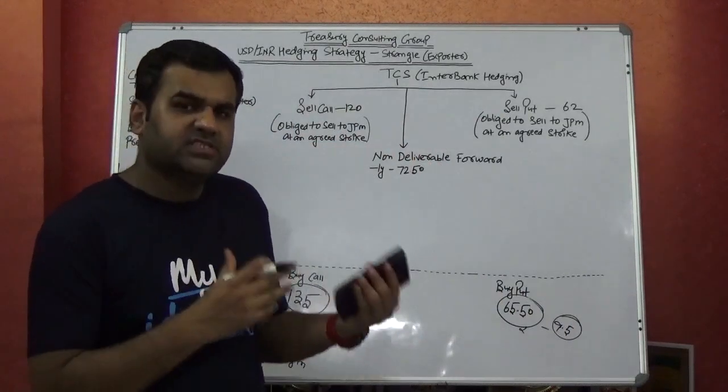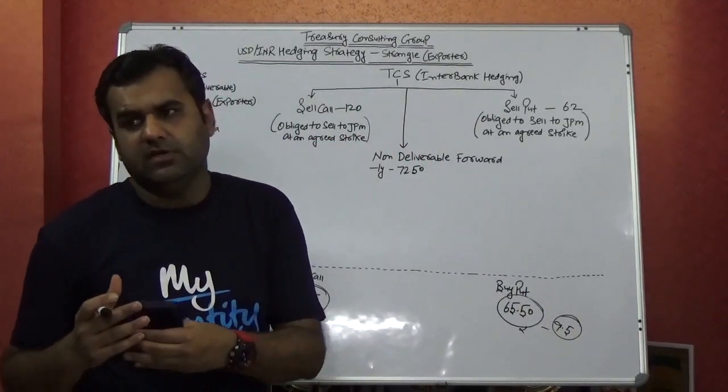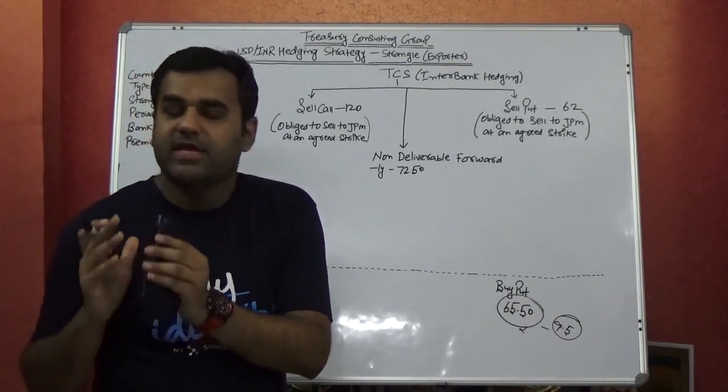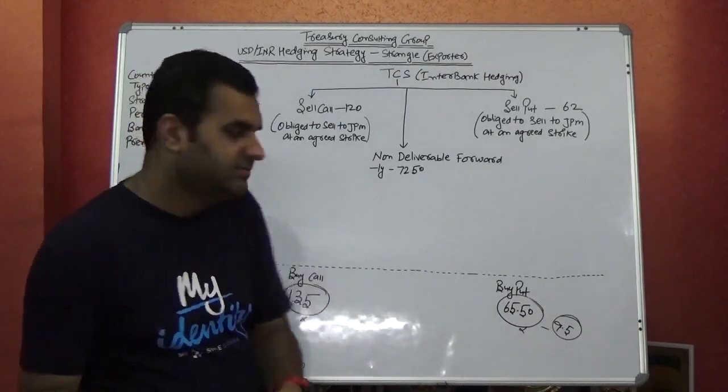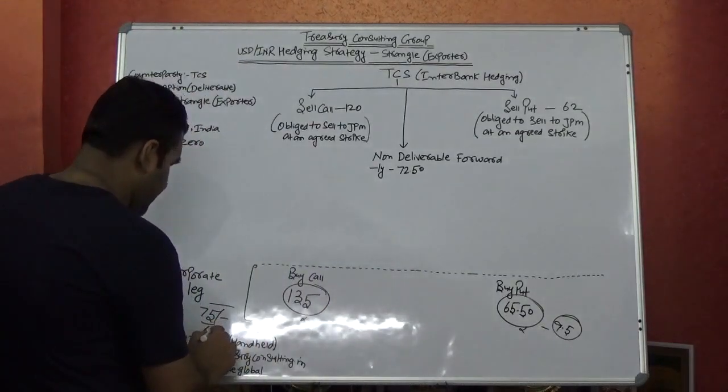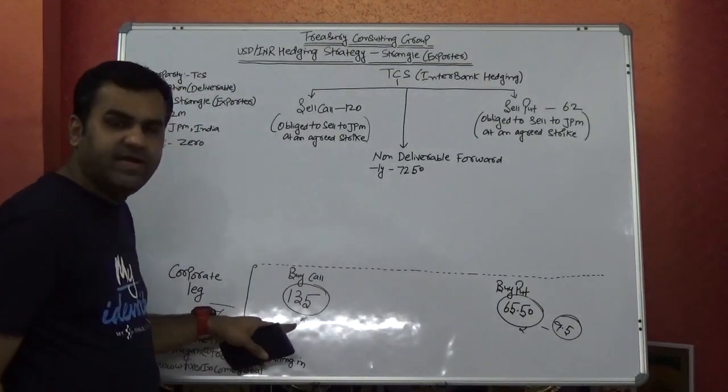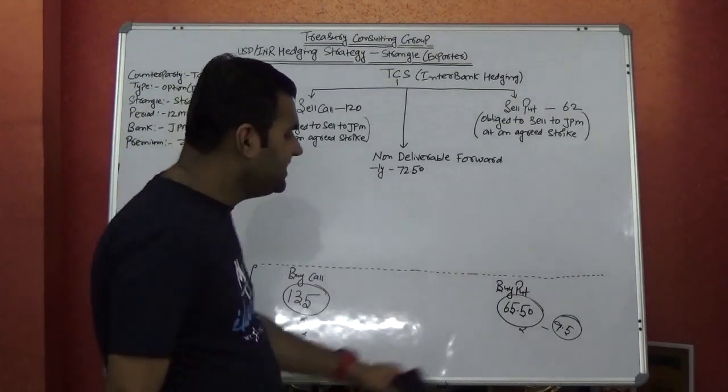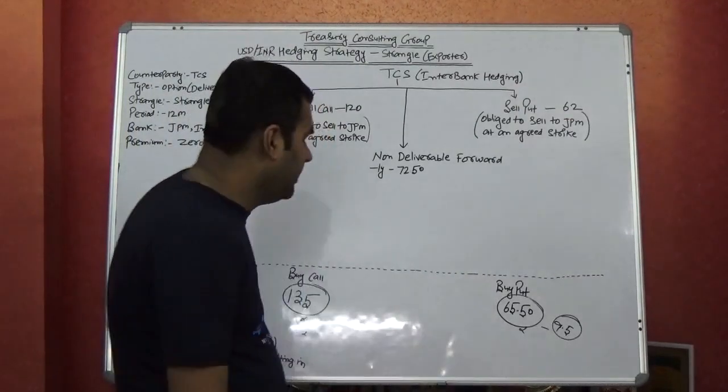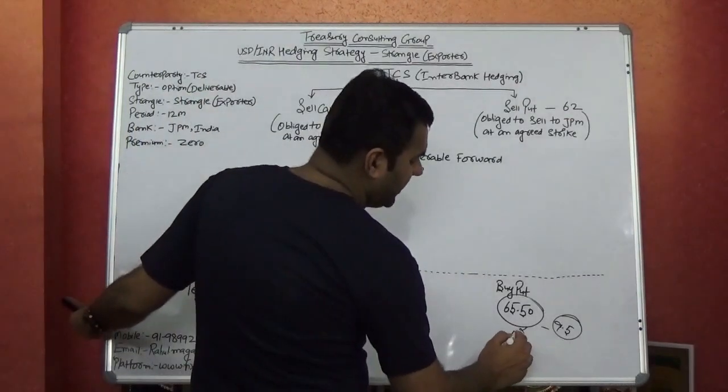Now this is the worst case I assume. Assuming Indian rupee turns out to be 60—this is next to impossible, but still. Would TCS buy here at 71.30? No. Would TCS sell here? Absolutely. They will be getting a gain of 5.5.